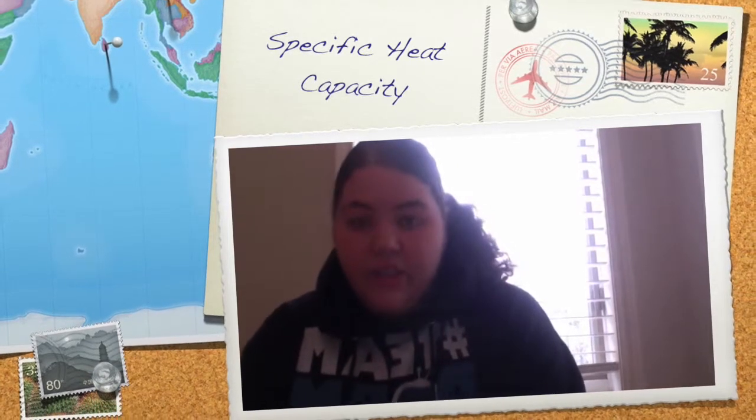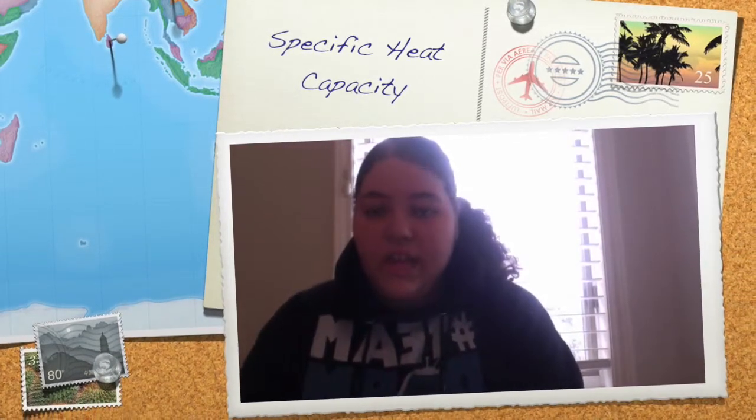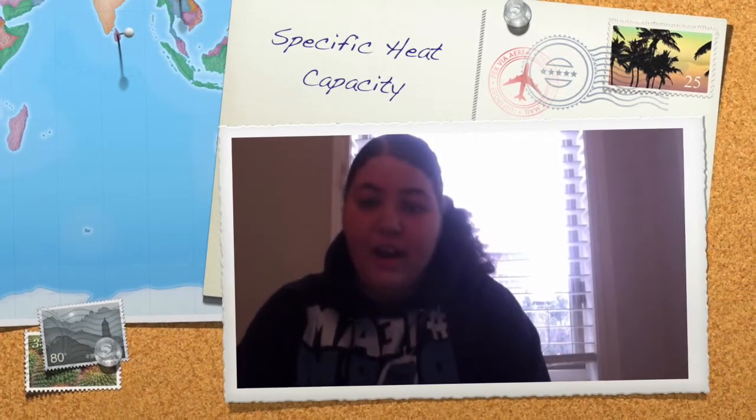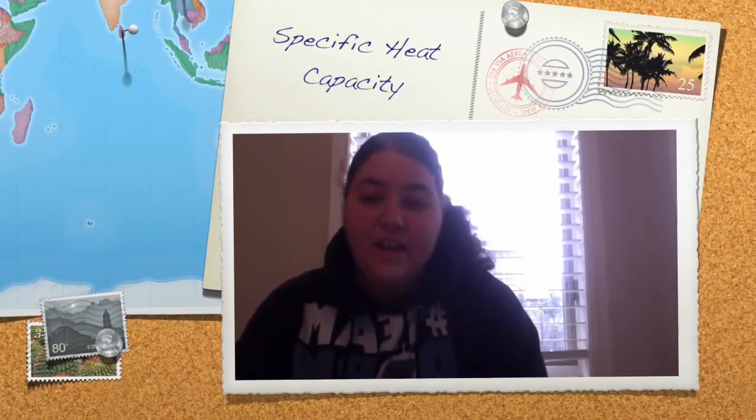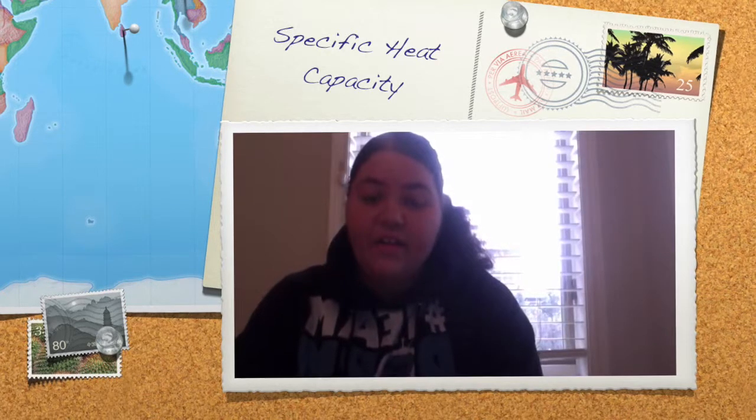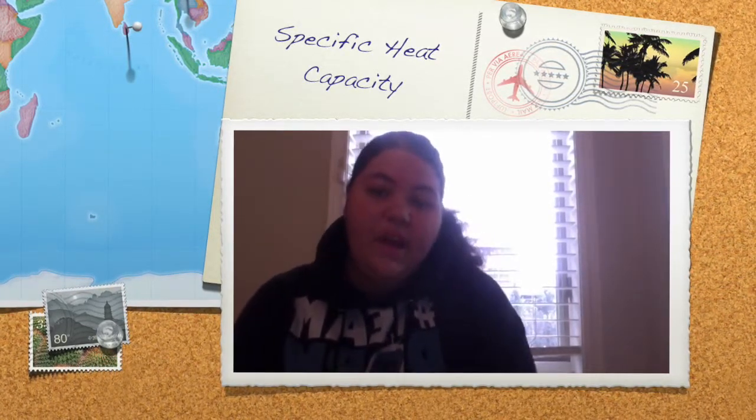To actually bake the macaroni and cheese, we used a glass container. The specific heat capacity of glass is 0.84 joules per gram times degrees Celsius. The container has a higher heat capacity than the metal, which allows it to heat up slowly in the oven so all the food heats evenly.